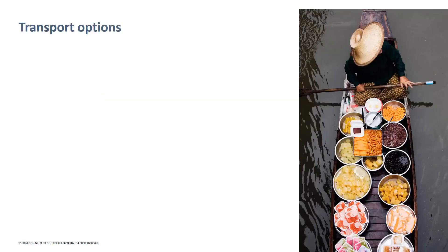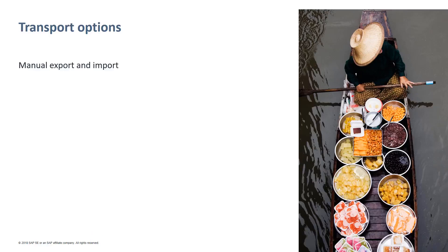Let's check which transport options exist. The first option is to simply use Export and Import. When you export an integration package from the workspace of the source tenant, a zip file is stored on your local file system. You can then manually import that zip file into the target tenant.